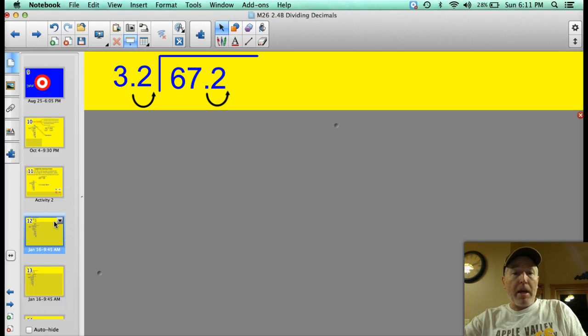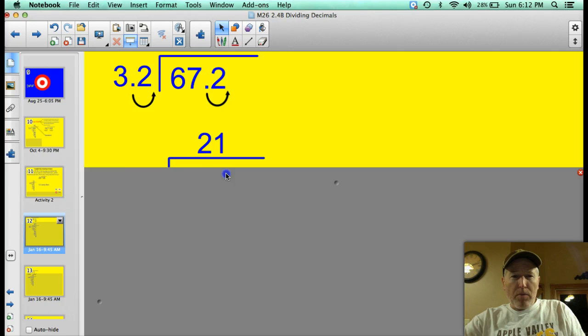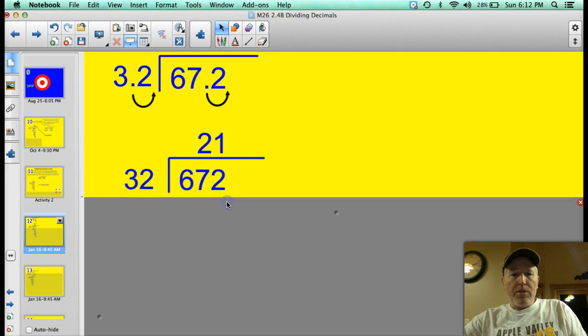We have 3.2 divided by 67.2. Well, I've just got one decimal here. So I move it one spot to give me 32 instead of 3.2. Of course, I have to move it in the dividend one spot as well. Here's my new problem. 32 divided by 672.